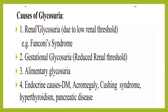Sometimes the blood glucose level is normal but glucose still appears in the urine because the kidneys cannot reabsorb it. This can be due to damage to the proximal convoluted tubules, as in Fanconi syndrome, or the renal threshold may be reduced. In pregnancy the renal threshold is lowered, so glucose is excreted in the urine — this is gestational glycosuria or renal glycosuria.